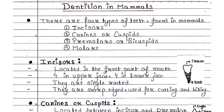Let's talk about dentition in mammals. There are four types of teeth found in animals. First one is incisors, second is canines or cuspids, third is premolars or bicuspids, and fourth one is molars. These four types of teeth are mainly found in mammals.